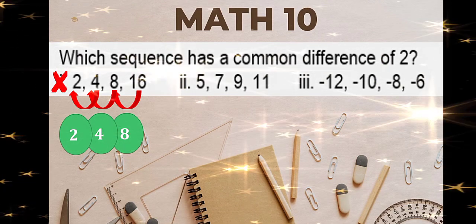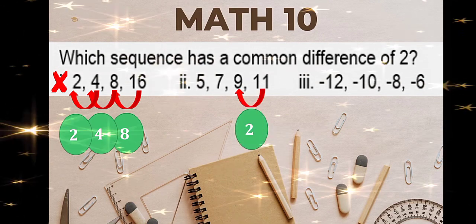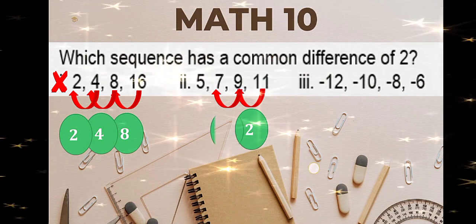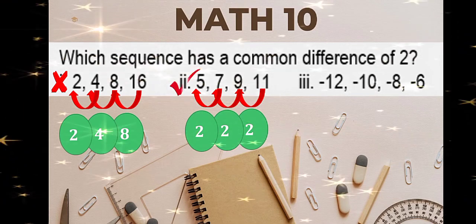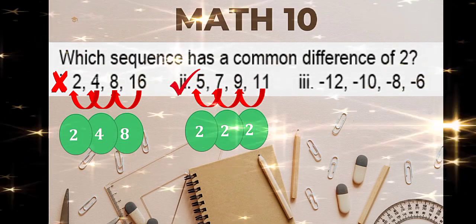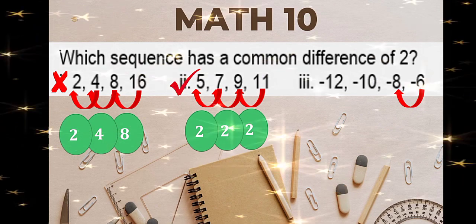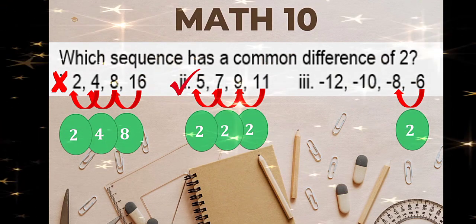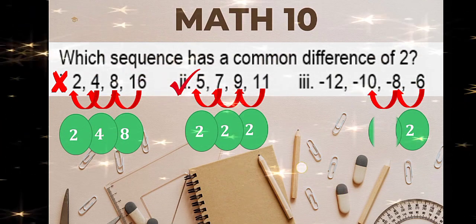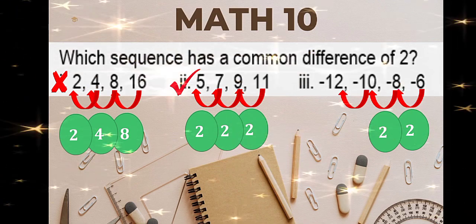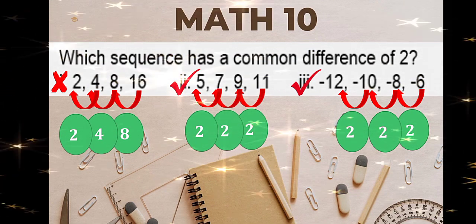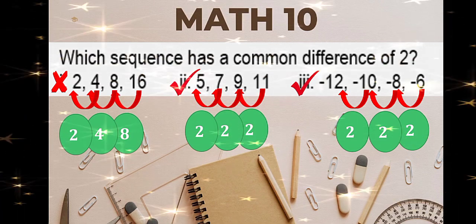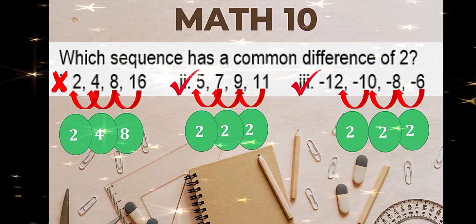How about number 2? 11 minus 9 is 2. 9 minus 7 is also 2. Then 7 minus 5 is also 2. So, this is correct. How about number 3? Negative 6 minus negative 8 is 2. Negative 8 minus negative 10 is also 2. Negative 10 minus negative 12 is also 2. This is also correct. Therefore, the sequences that have a common difference of 2 are number 2 and number 3 only.